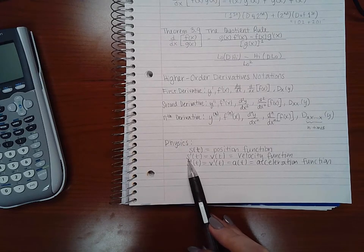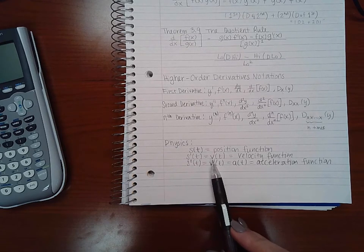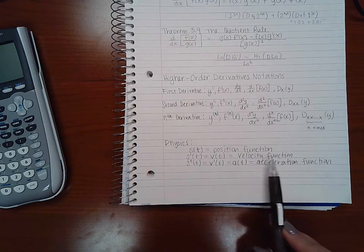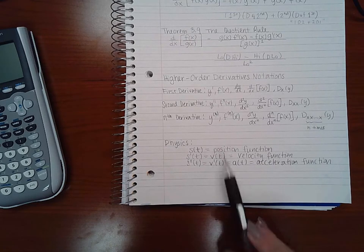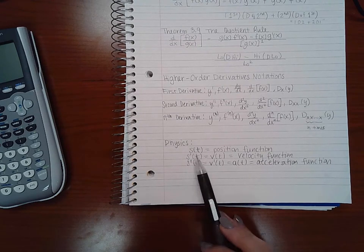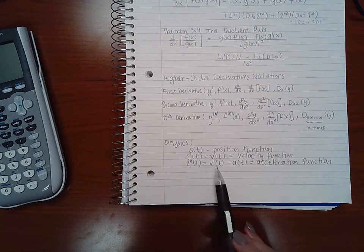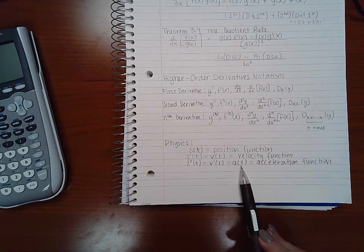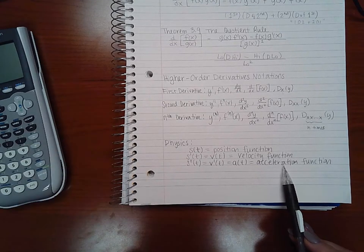Then you have the first derivative s'(t), which is also v(t), the velocity function, which is the speed or the rate at which this first function is traveling. Then you have the second derivative of your original function or the first derivative of the velocity function. Either of those, they should be the same, is going to be the acceleration function. So this is how fast you're accelerating.